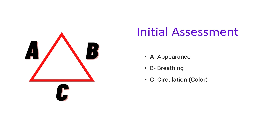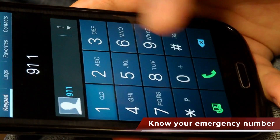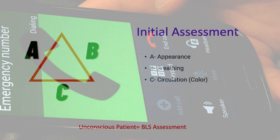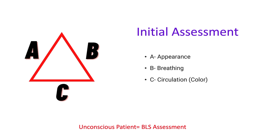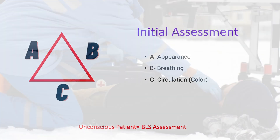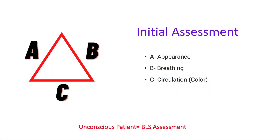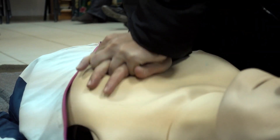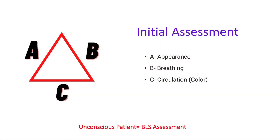The initial assessment helps us to quickly identify life-threatening conditions. If at any time we identify a life-threatening condition, immediately start intervening and activate our emergency response system. If a child appears to be unresponsive, immediately follow your BLS assessment. If the child is not breathing but has a pulse, start rescue breathing by giving one breath every 2 to 3 seconds, which is 20 to 30 breaths per minute. If the child does not have a pulse, immediately start high-quality chest compressions, pushing hard and fast in the center of the chest at 100 to 120 pushes per minute, allowing the chest to fully recoil. Do not interrupt CPR for longer than 10 seconds and do not hyperventilate.